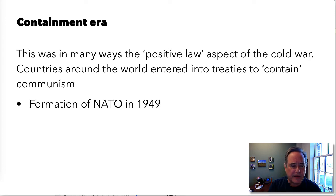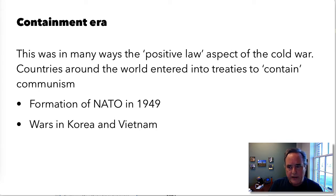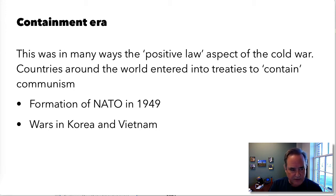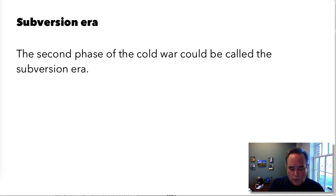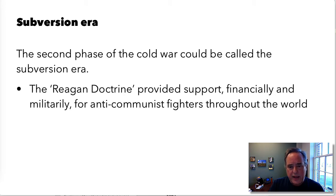Countries around the world entered into treaties designed to contain communism. We saw the formation of NATO in 1949. We also saw wars in Korea and Vietnam, which were essentially proxy wars for the Cold War, done under the authority of international organizations — the United Nations in the case of Korea, and Vietnam being a result of a treaty between the United States and South Vietnam. The second era of the Cold War involved an attempt not just to contain communism but to roll it back.